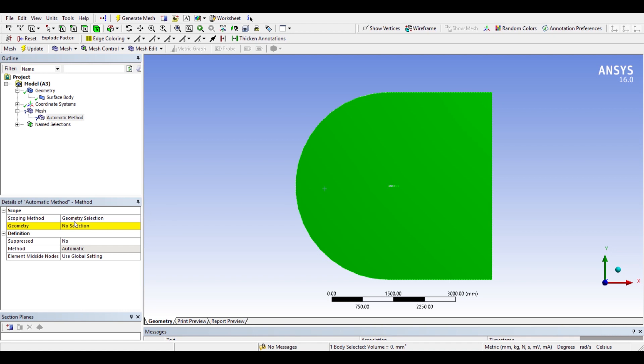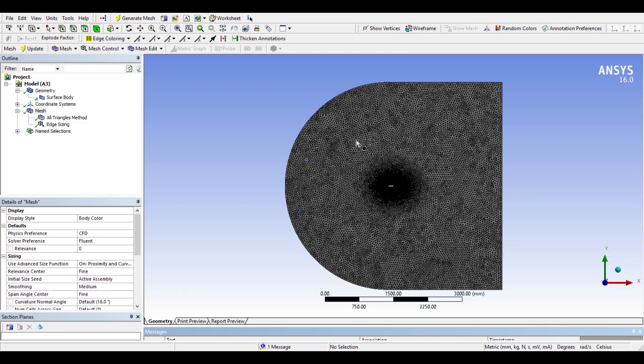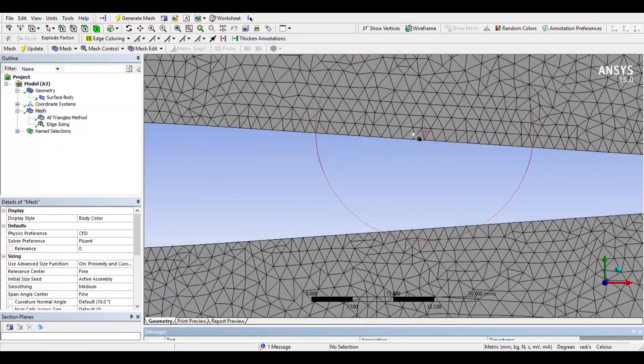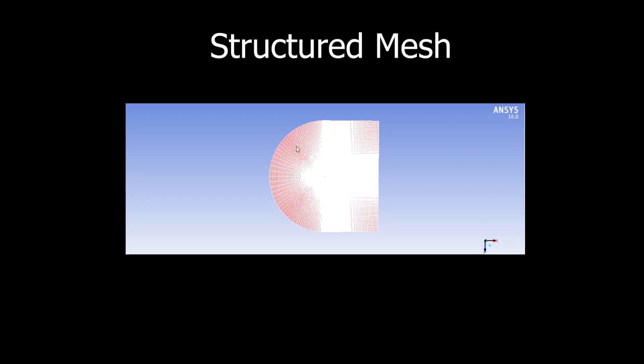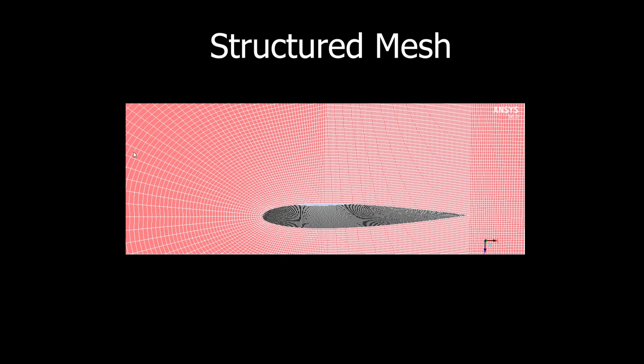The mesh can either be made structured or unstructured. In the case of a 2D geometry, a structured mesh is dominated by quadrilateral elements, whereas an unstructured mesh is dominated by triangular elements. The mesh shown here is unstructured. As you can see, it is dominated by triangular elements. Whereas the structured mesh that we have created has regular elements, which are predominantly quadrilateral or rectangles in nature.